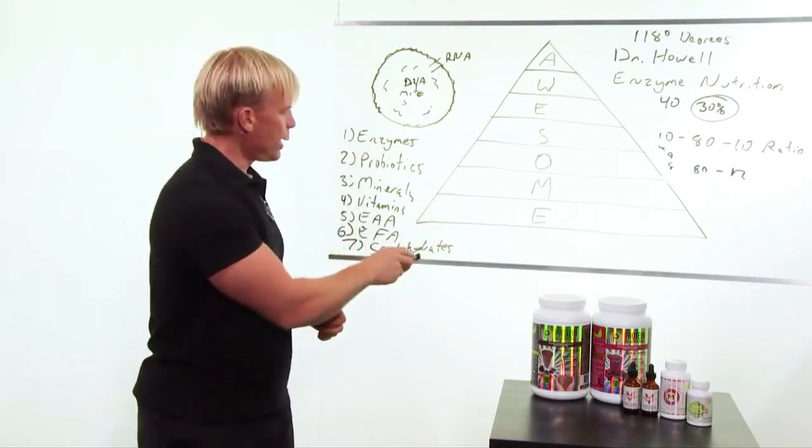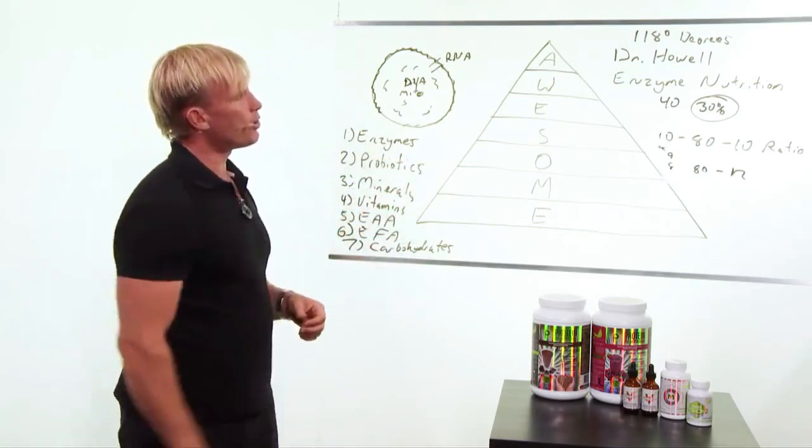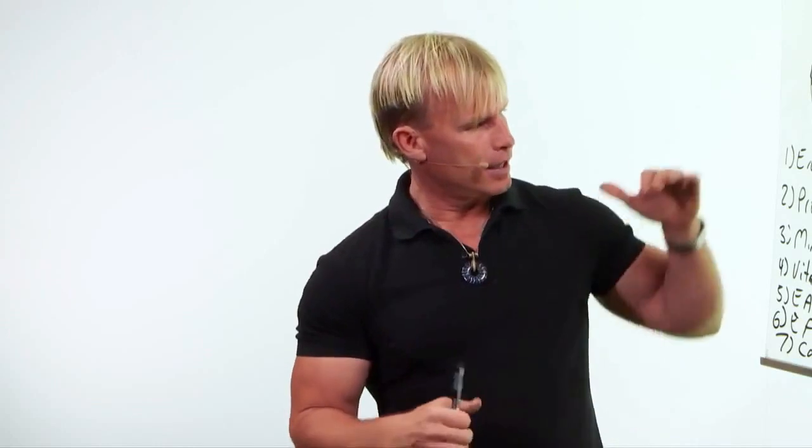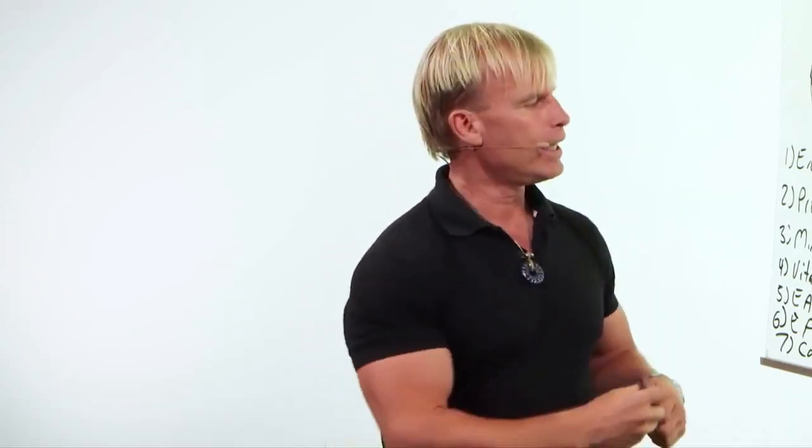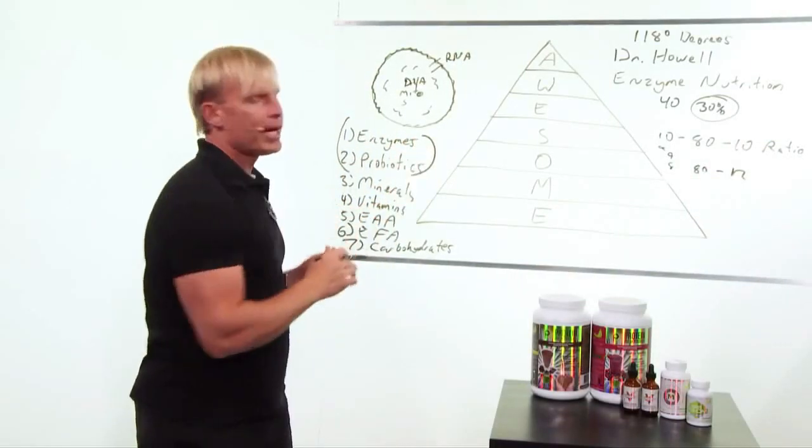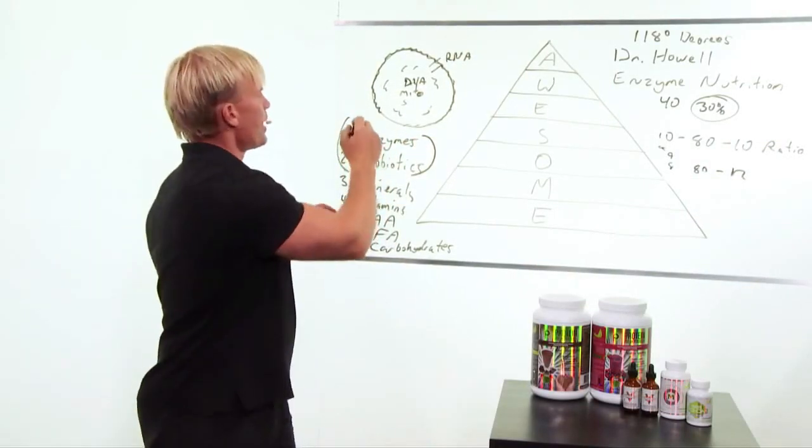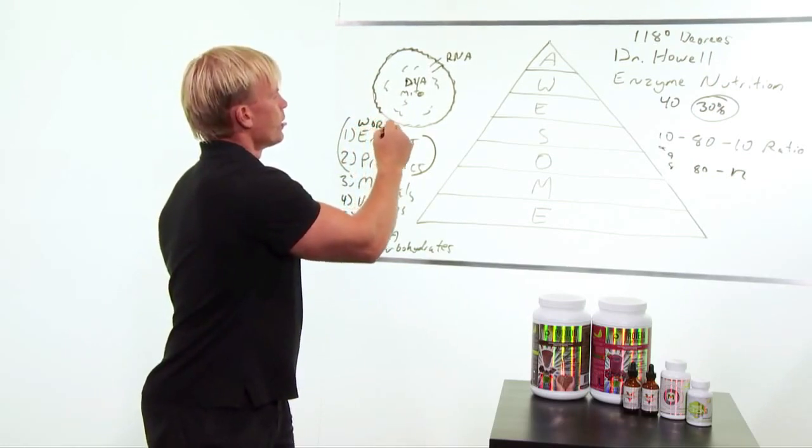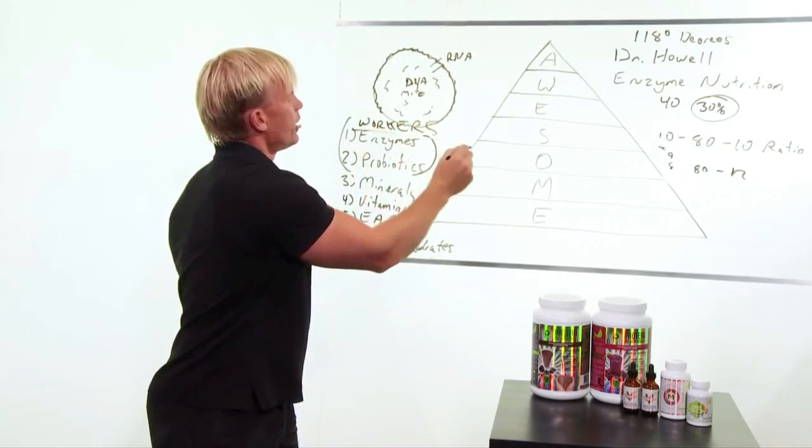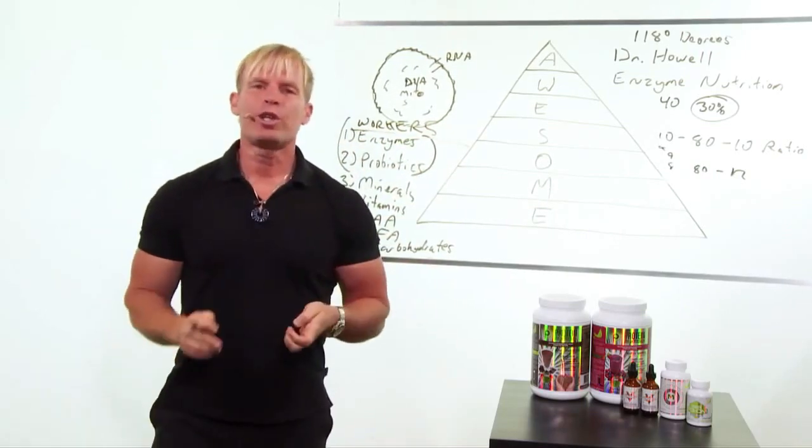These seven things are super essential. And let me explain how this works. When we talk about the cells, in order to bring this inside the body, you need enzymes and probiotics. These two things, they're the workers. We'll put that over here: workers. They're the only things that do work. All of the rest of these things are building materials.